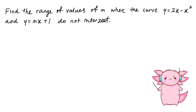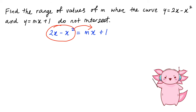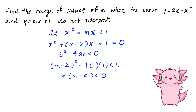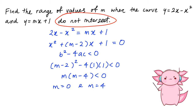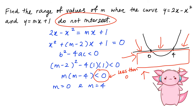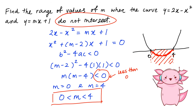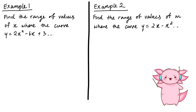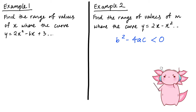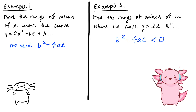For this question, we put our two equations together, combine the x-squared and x terms, and do b² − 4ac < 0 because the question says 'does not intersect.' We draw the graph using the same method as before, and because the region is less than 0, the answer is the region between 0 and 4. Notice that in the second example we needed b² − 4ac, but in the first example we didn't.